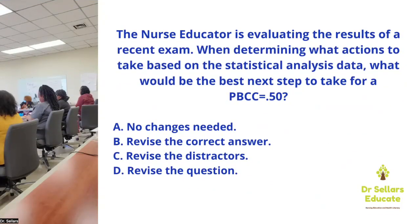Let's start with our thought-provoking question. A nurse educator is evaluating the results of a recent exam. When determining what actions to take based on the statistical analysis data, what would be the best next step for a point biserial correlation coefficient equivalent to positive 0.50? Option A: no changes needed. Option B: revise the correct answer. Option C: revise the distractors. Option D: revise the question.